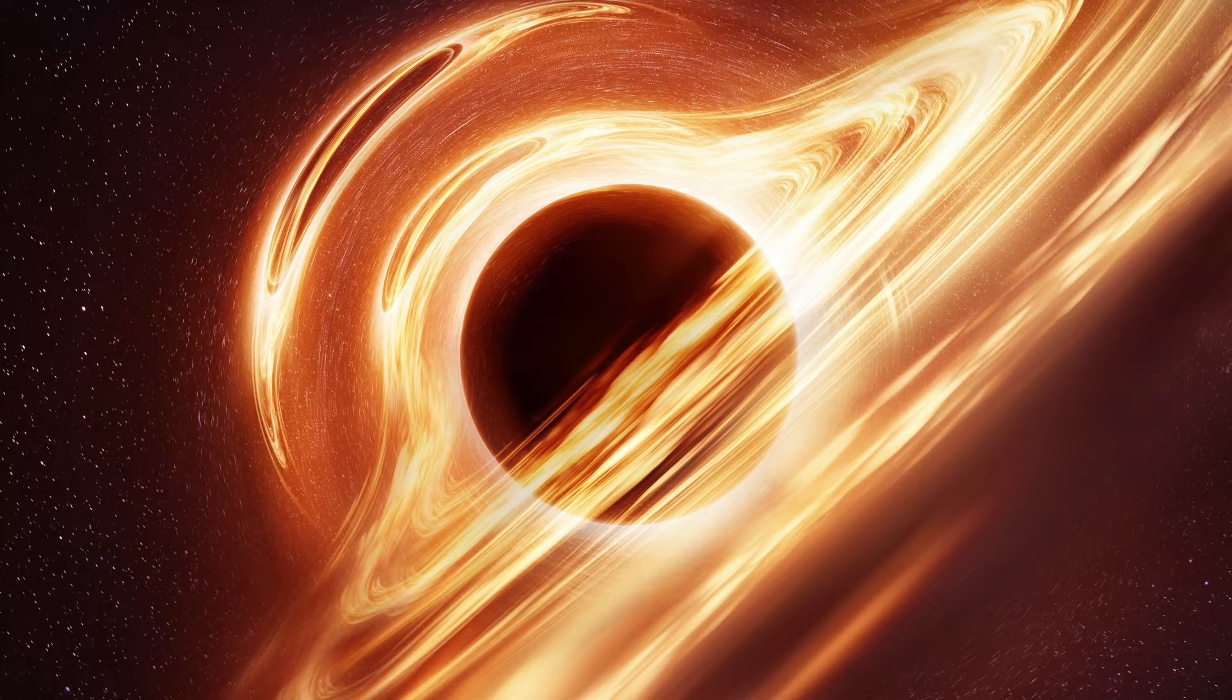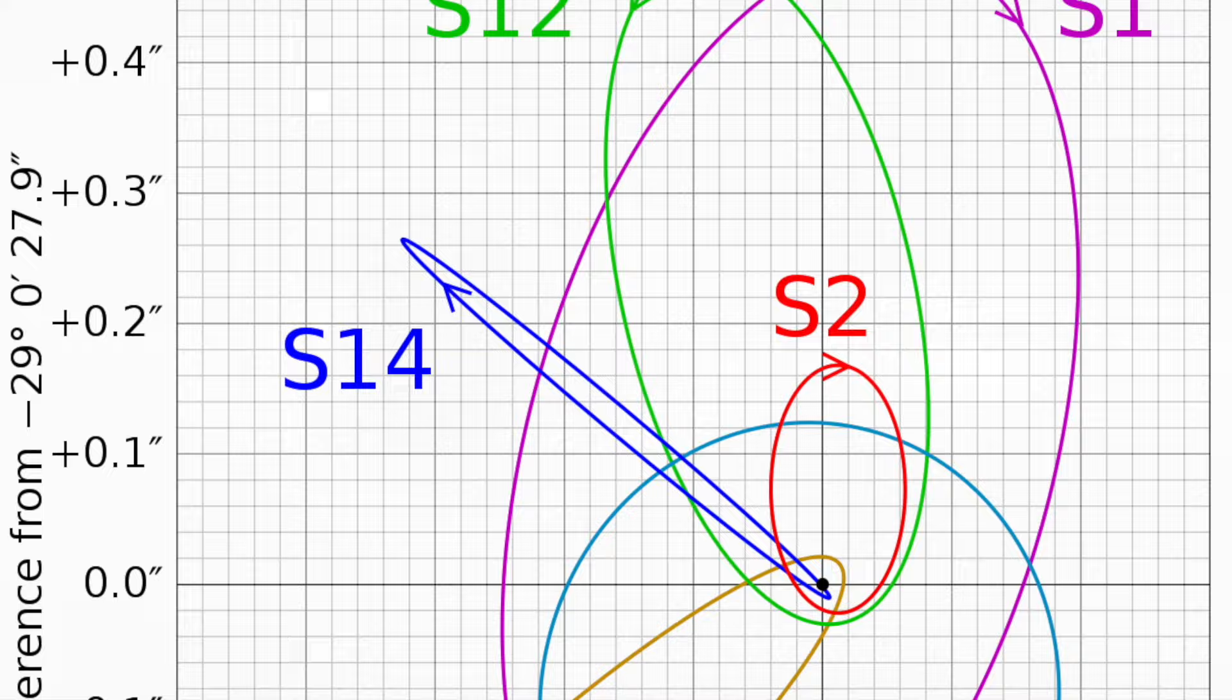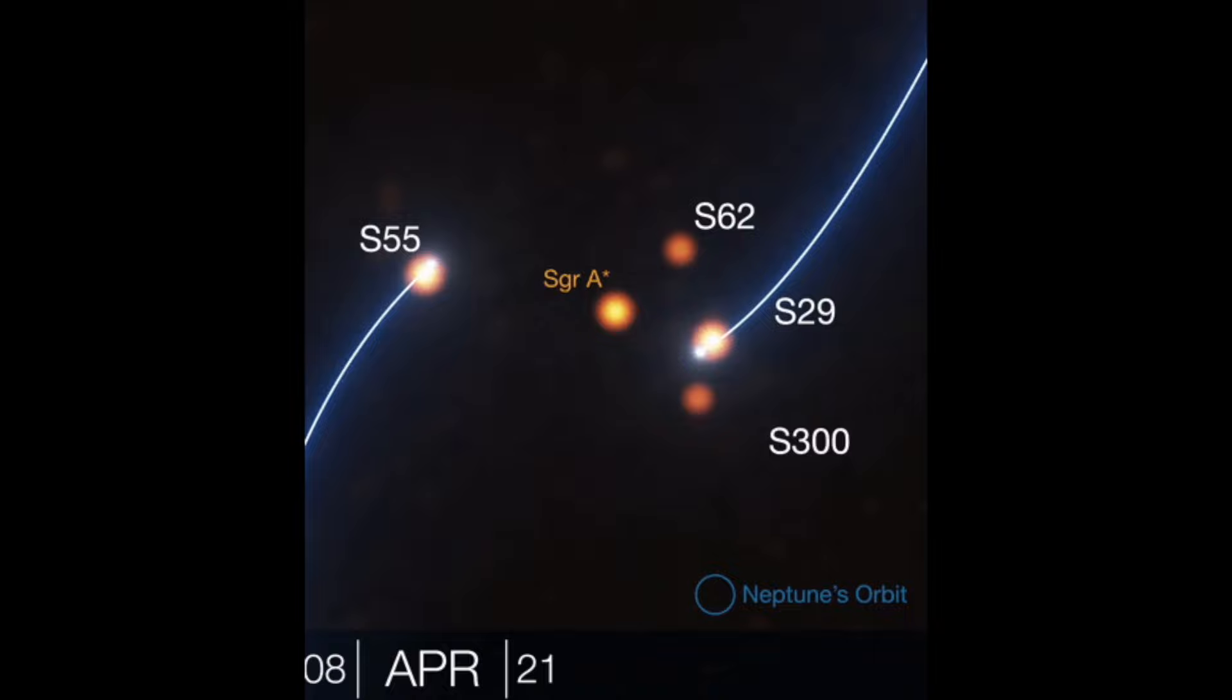A remarkable achievement occurred in 2020 when Reinhard Genzel and Andrea Ghez were awarded the Nobel Prize in Physics for their groundbreaking discovery that Sagittarius A-star is a supermassive compact object, strongly pointing towards its nature as a black hole.